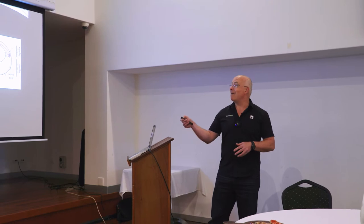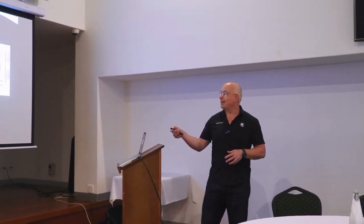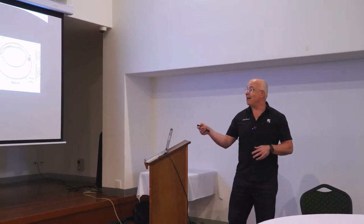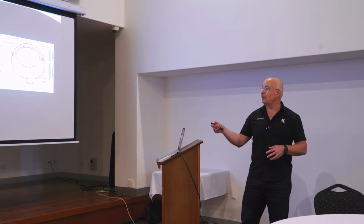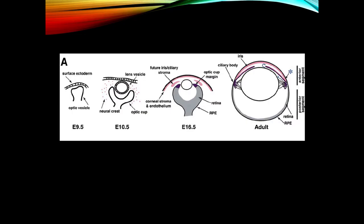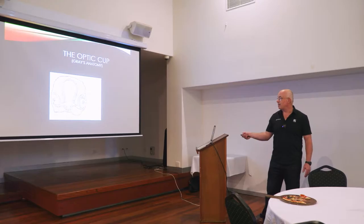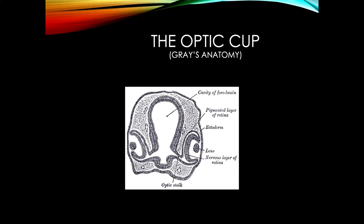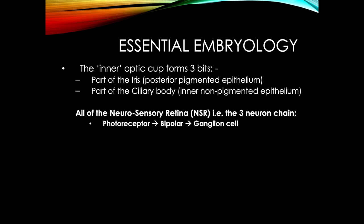The eye develops as an out-pouch of neuroectoderm and that out-pouch takes on this classic shape. The key thing about it is that this is known as the optic cup — there's the embryonic lens — and it's important because it will allow us to understand the retina.